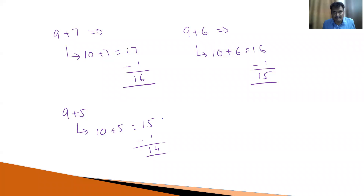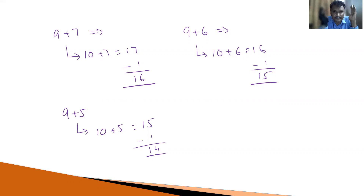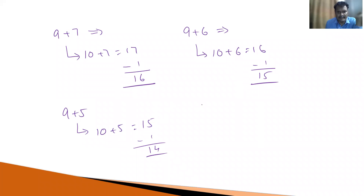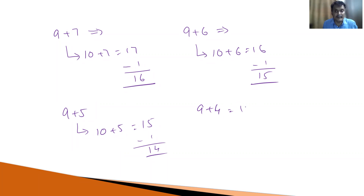No need to write down all these numbers — all calculations are done in your mind only. 9 plus 7: immediately, 10 plus 7 equals 17, minus 1 equals 16. What is 9 plus 6? 10 plus 6 equals 16, minus 1 equals 15. What is 9 plus 5? 10 plus 5 equals 15, minus 1 equals 14. What is 9 plus 4? 10 plus 4 equals 14, minus 1 equals 13.